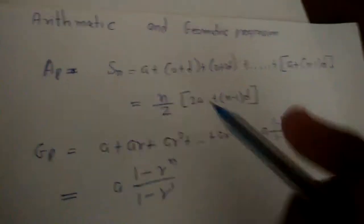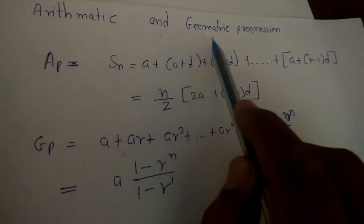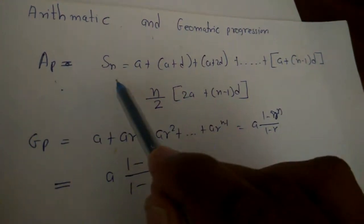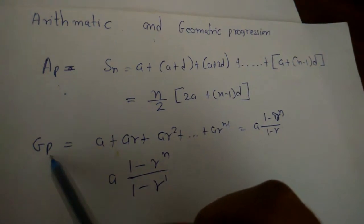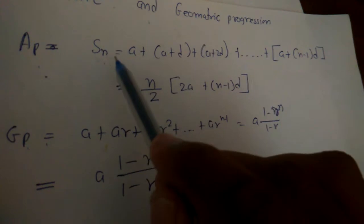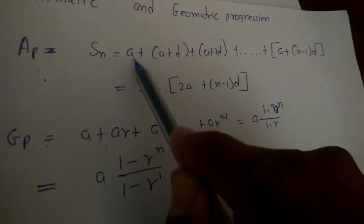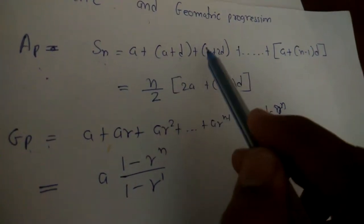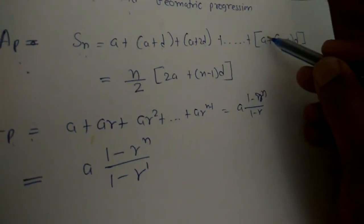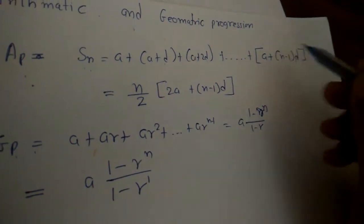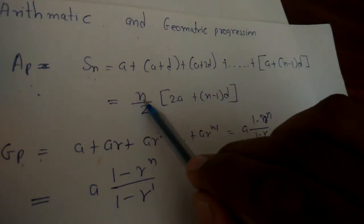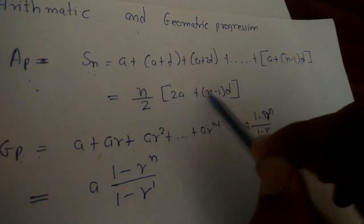In mathematics, they create arithmetic and geometric progression. This is arithmetic progression. Sn means the sum of n terms: a plus a plus d plus a plus 2d, and so on. We compress this equation as n by 2 times 2a plus n minus 1 times d.